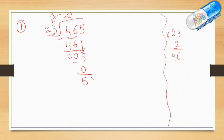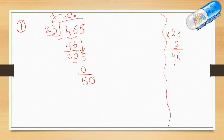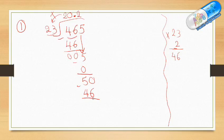If I want to continue, I put a 0 and a decimal point here. So I add a 0 and put a decimal point. Now divide normally: 50 divided by 23. I know that 23 times 2 is 46, which is close to 50. If I multiply 23 times 3 it will be more than 50, so I take 2. 2 times 23 is 46, and I subtract to get 4.